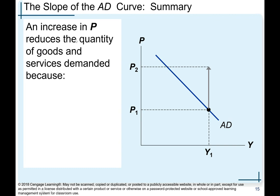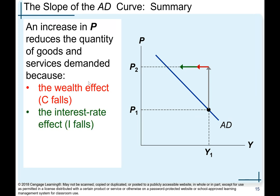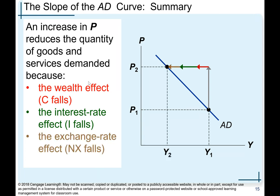Summary of the AD curve slope: an increase in price reduces the quantity of goods and services demanded because of the wealth effect (consumption falls), the interest rate effect (investment spending falls), and the exchange rate effect (net exports fall).